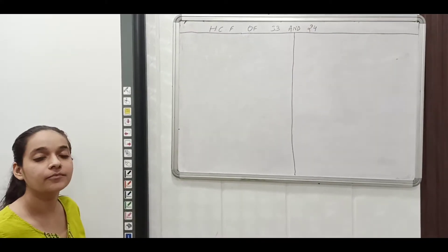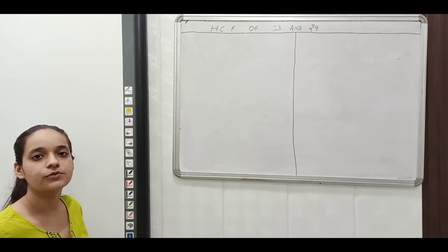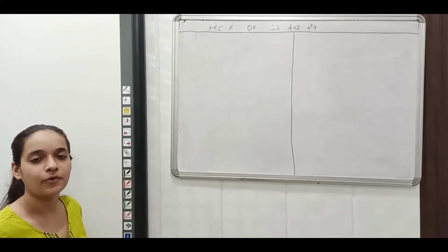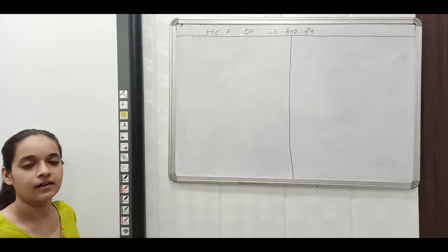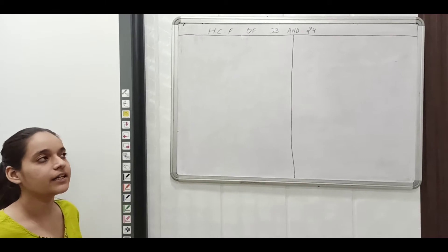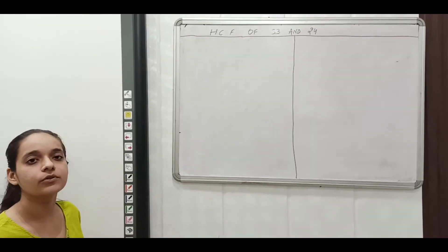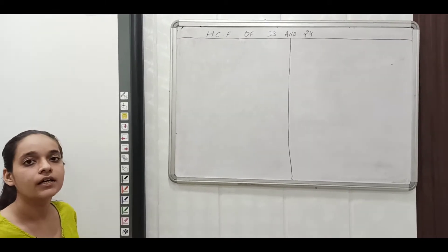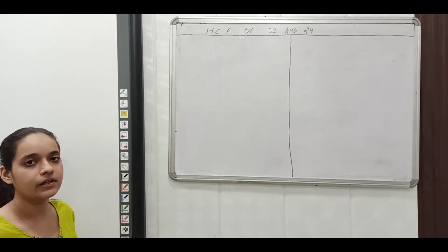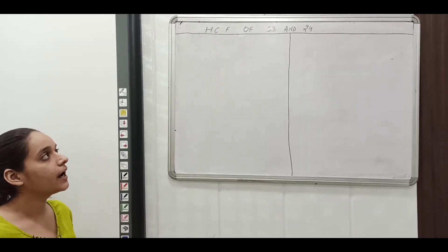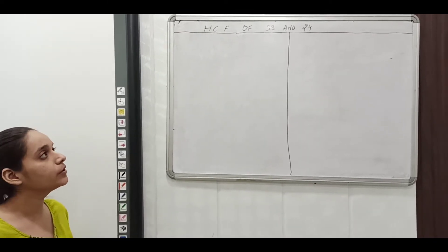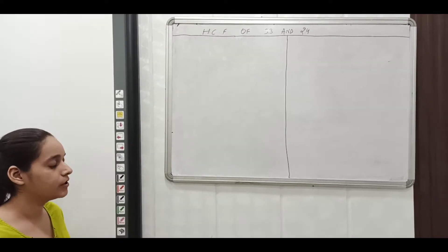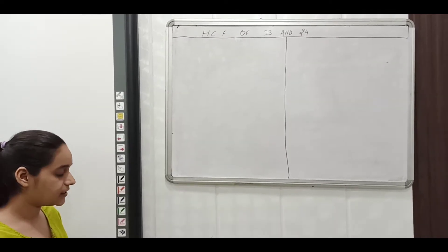Let's discuss some theory related to this activity. This activity is based upon Euclid's division lemma. It is a technique to find out the HCF of two natural numbers. You can take any natural number. Here I am going to show the HCF of two natural numbers, that is 33 and 24. So now let's start.